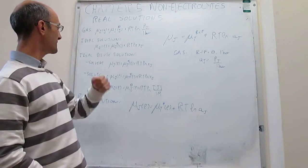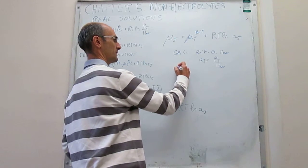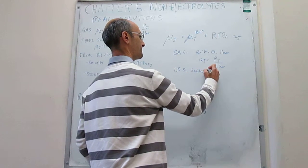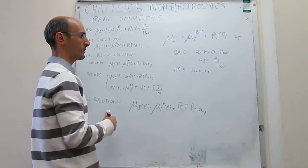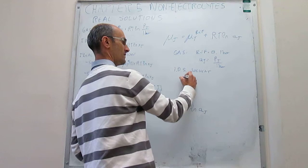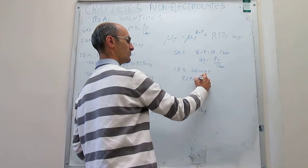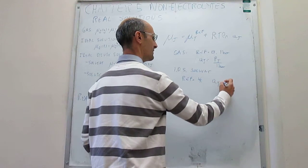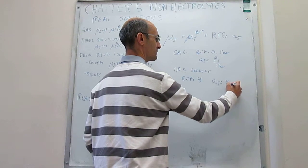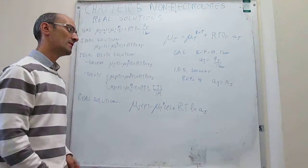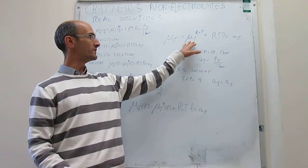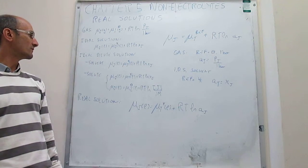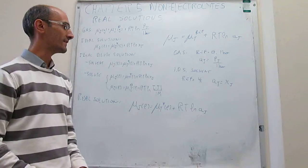For an ideal dilute solution, looking at the solvent: the reference in this particular case is going to be the pure liquid, and then the activity A sub J is simply going to be equal to x sub J, the mole fraction. This shows the route to map this universal activity expression into the chemical potential for the solvent in an ideal dilute solution.